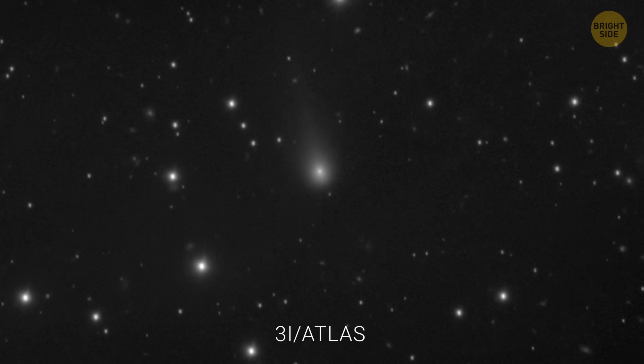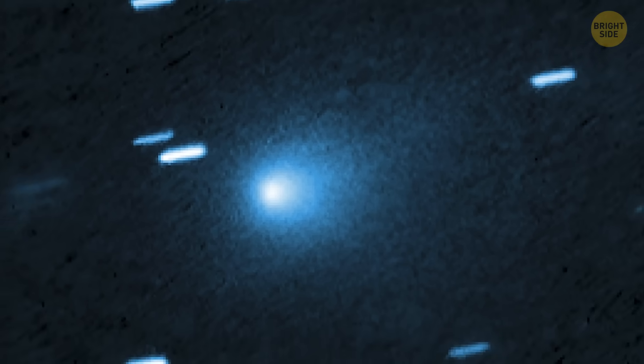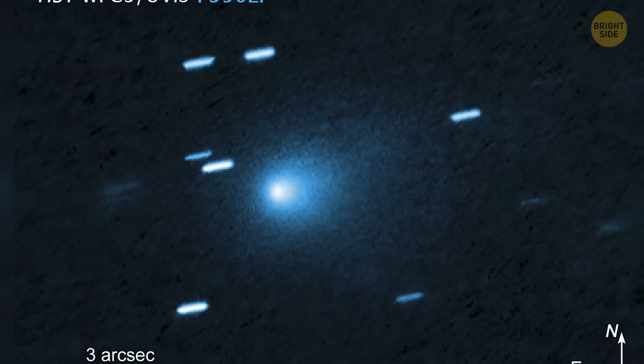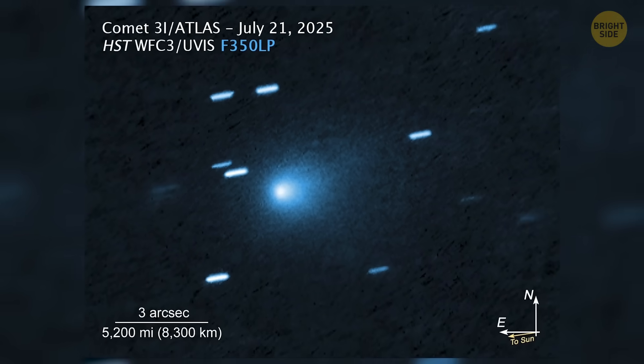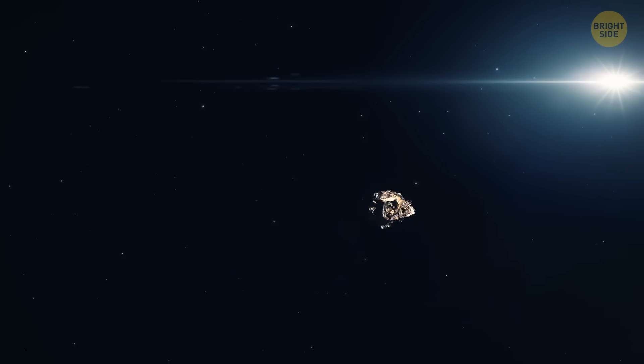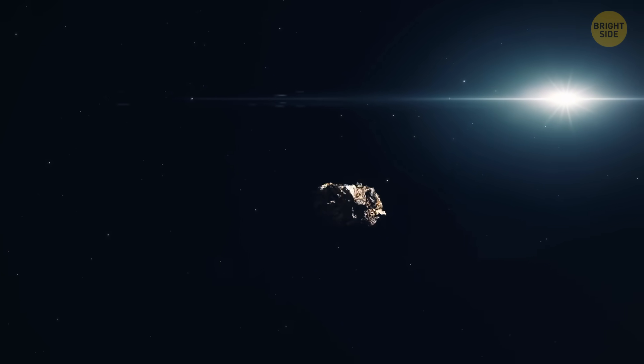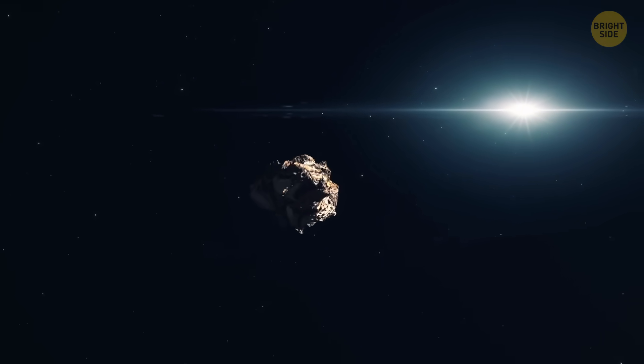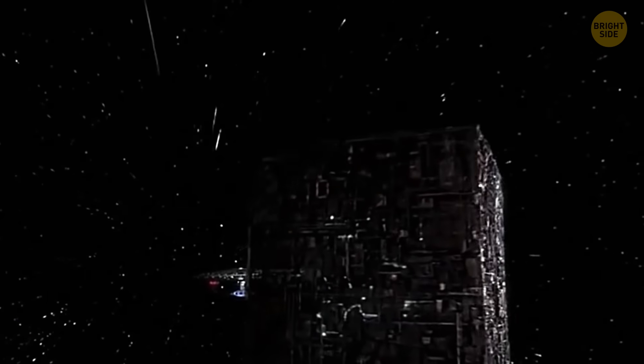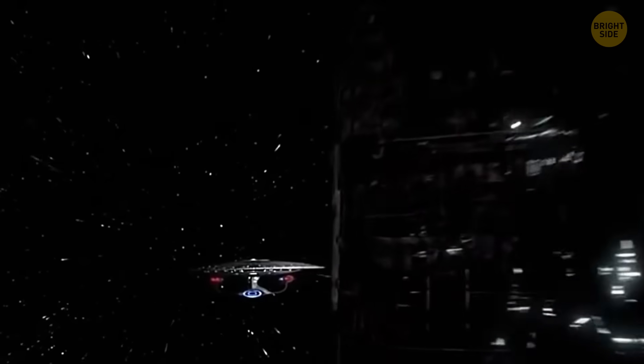Well, the space object 3i Atlas just whipped past the Sun, and instead of clearing things up, the new images made everything even stranger. Because if this thing really is a comet, then it's the strangest comet ever recorded. And if it's not a comet, then we're watching something completely new invade our solar system. So, should we be worried?